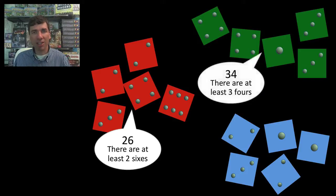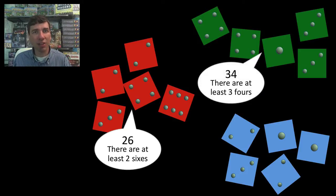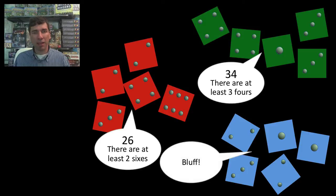They've got two fours. So they're going to say that there are at least three fours out there. Now, the blue group doesn't have any fours. So they think 34. That's a pretty high bid. I'm going to call bluff on that. Now, in fact, there are three fours out there. So the blue group, unfortunately, was not truthful whenever they said bluff. So they're going to lose dice.